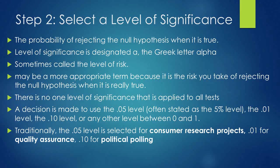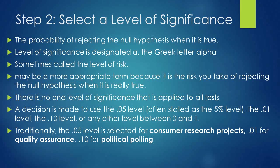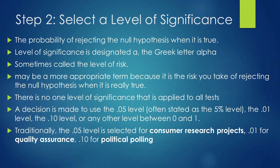The second step is to select the level of significance, also called the power of the test, denoted alpha. It is the probability of rejecting the null hypothesis when it is true — also called a Type 1 error, where error means mistake or bias. It is sometimes called the level of risk, because it is the risk you take of rejecting the null hypothesis when it is actually true.